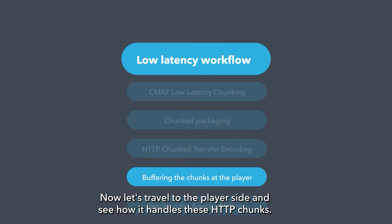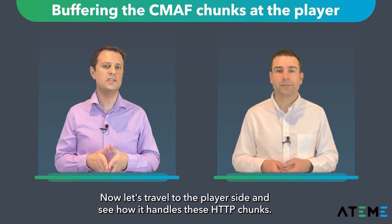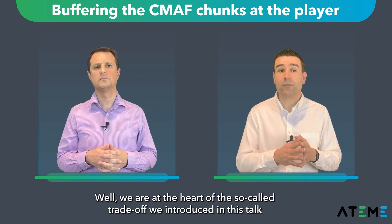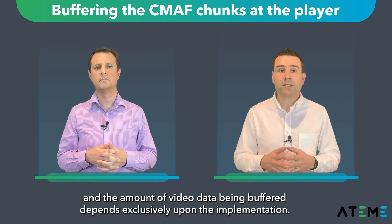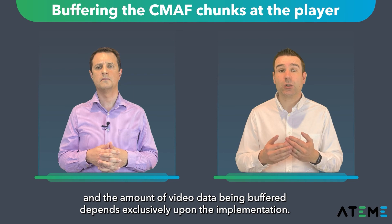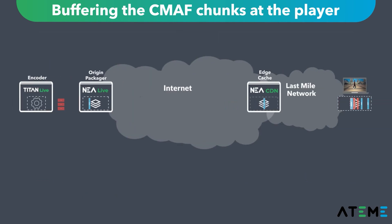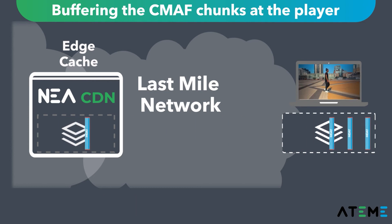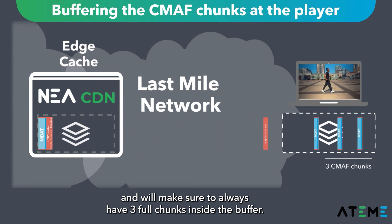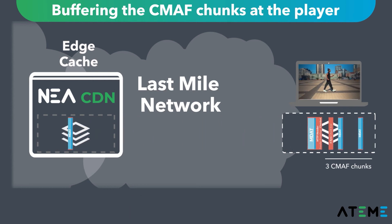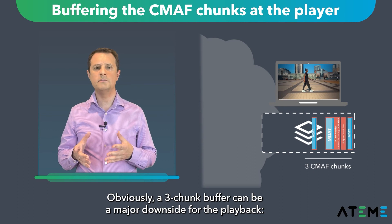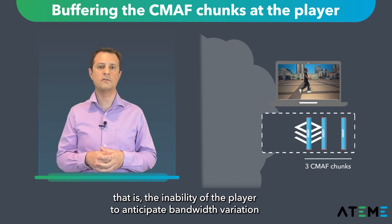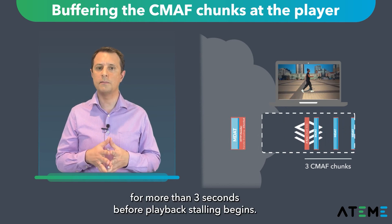Now let's travel to the player side and see how it handles these HTTP chunks. Here we are at the heart of the so-called trade-off we introduced earlier in the talk. The amount of video data being buffered depends exclusively upon the implementation. In our example here, we decided to apply the same rule as with traditional DASH, and we will make sure to always have three full chunks inside the buffer. Obviously, a three-chunk buffer can be a major downside for the playback — that is, the inability of the player to anticipate bandwidth variation for more than three seconds before playback stalling begins.